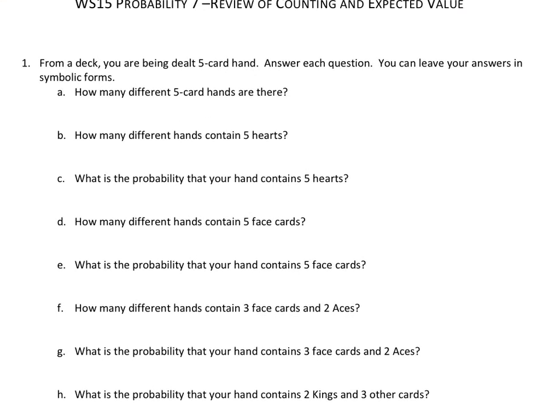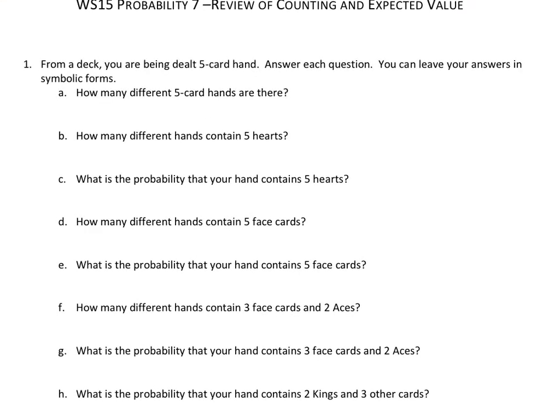Let's look at number one. From a deck of cards — there are 52 cards in a deck — you're being dealt a five-card hand, meaning five cards for whatever game we're playing. We're going to assume that the order in which we receive the cards doesn't really matter. For example, getting a king and an ace is the same as an ace and a king. That means most likely all the questions are going to be combination type questions.